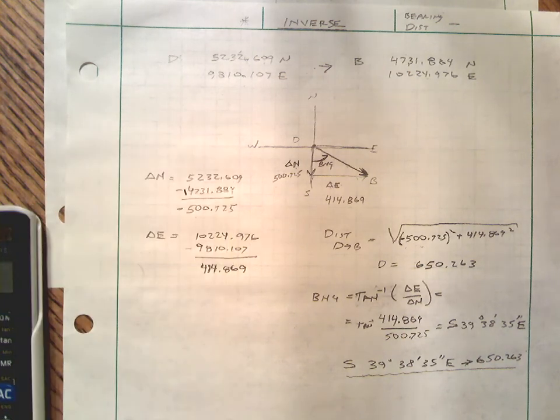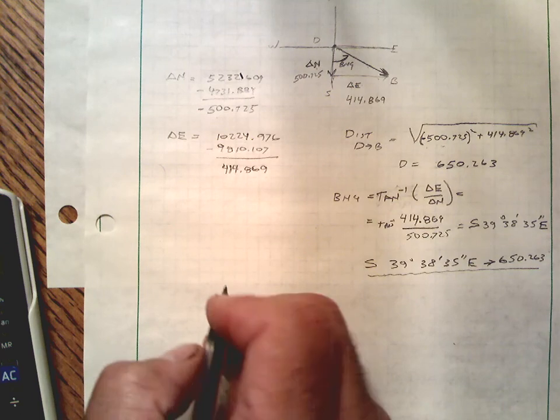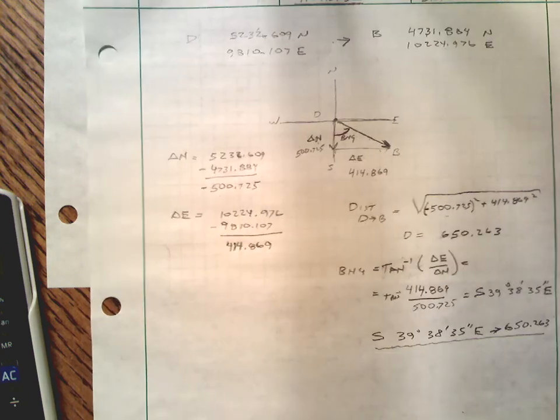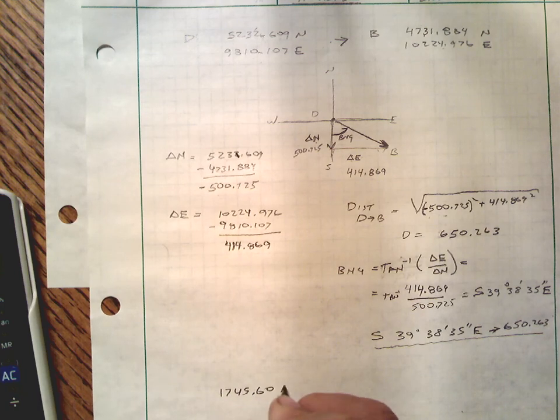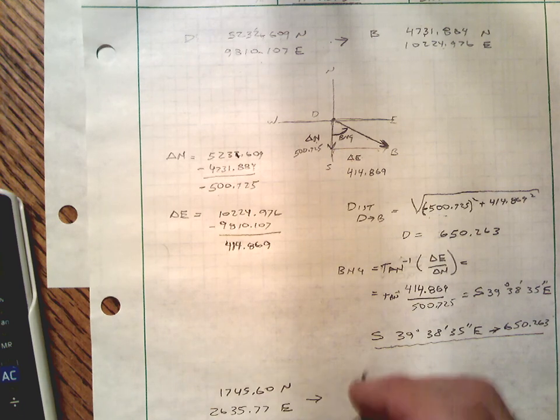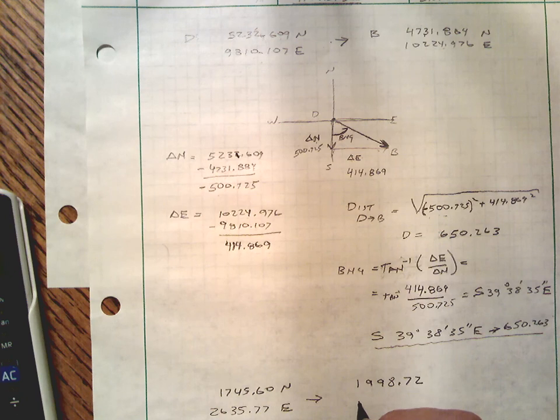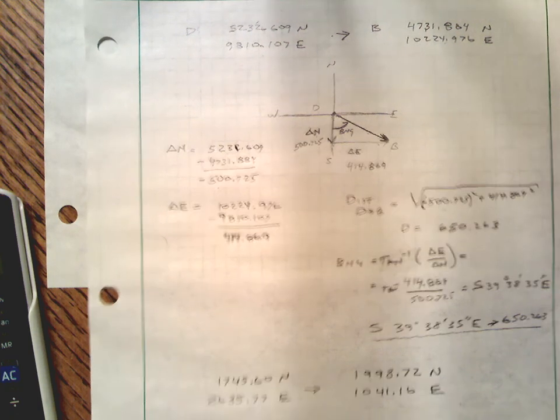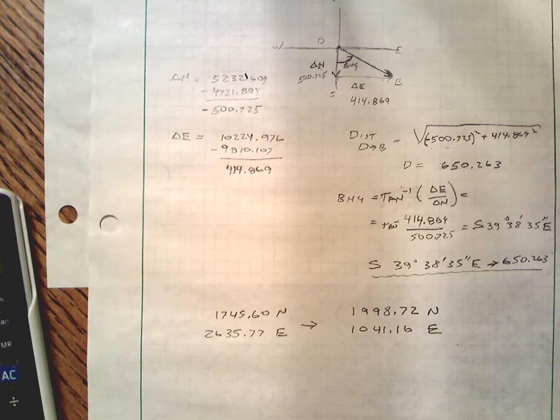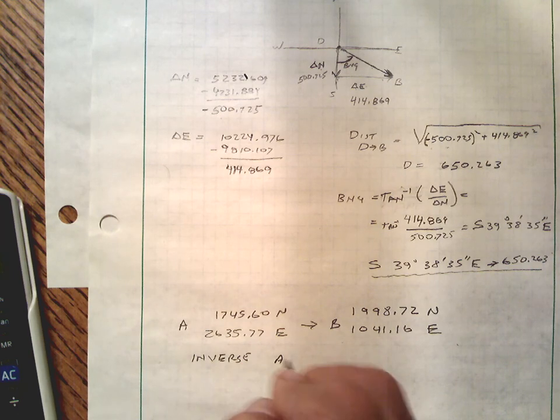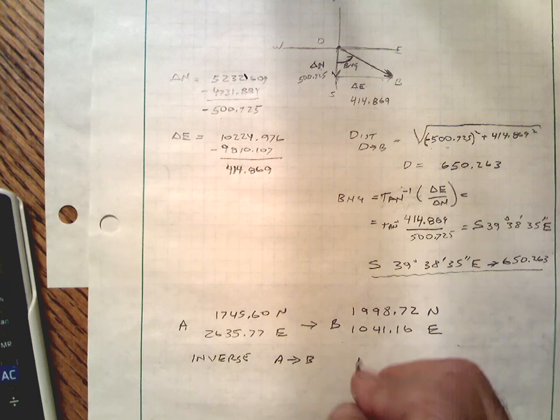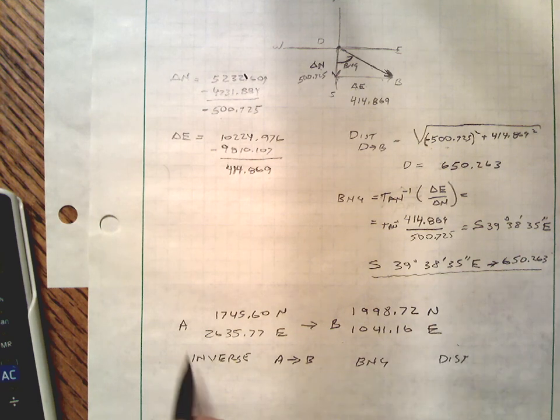And that's the answer. Let me put one here for you to try. I'll go through it. I'll pause the video. Those are the two numbers—we'll call this A and that B—and I want you to inverse from A to B. Tell me the bearing and the distance. Again, we're going from A to B.